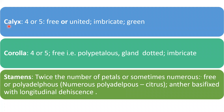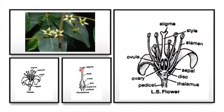Coming to floral characters: calyx has 4 to 5 sepals, free or united, with imbricate aestivation, generally green. Corolla again has 4 to 5 petals, free — polypetalous — gland-dotted, with imbricate aestivation. Stamens are twice the number of petals or sometimes numerous. They are free or polyadelphous; numerous and polyadelphous in citrus. Anthers are basifixed with longitudinal dehiscence — they dehisce longitudinally through a longitudinal slit.